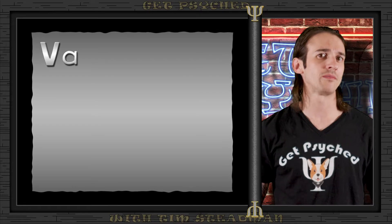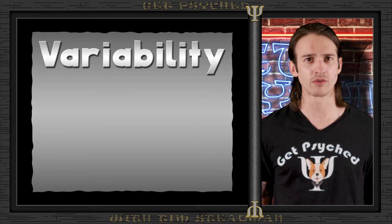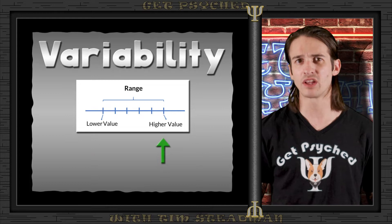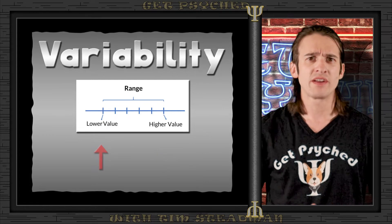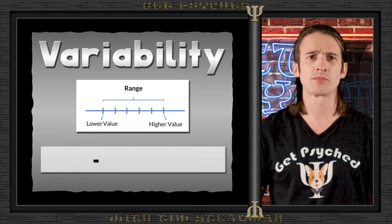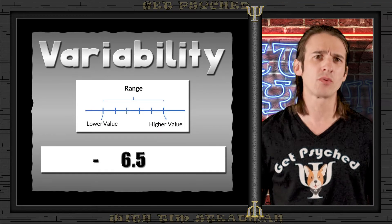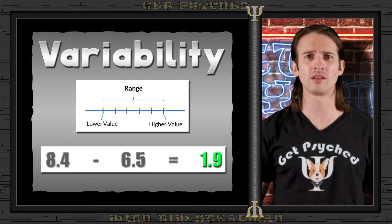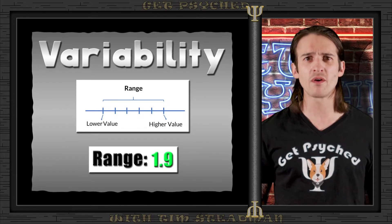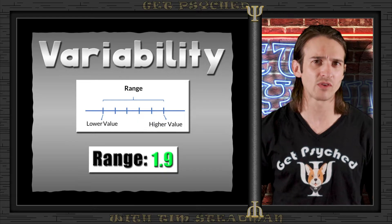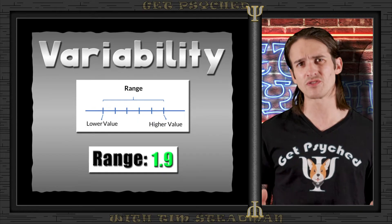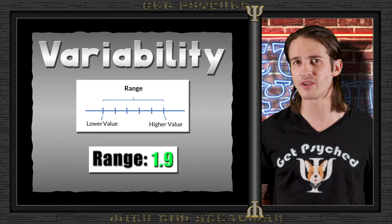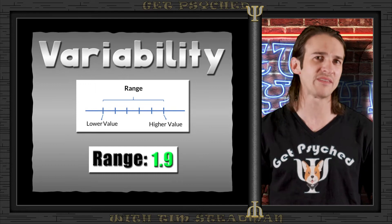Now let's look at measures of variability in our stress levels data set. Beginning with the range: for the 18 to 25 age group, we subtract the smallest reported stress level of 6.5 from the highest of 8.4, giving us a range of 1.9. This relatively small range indicates that while there are variations in stress level among individuals, these variations aren't extremely wide. This can be insightful when considering interventions tailored to this age group, as their stress levels cluster around a specific segment of our scale.